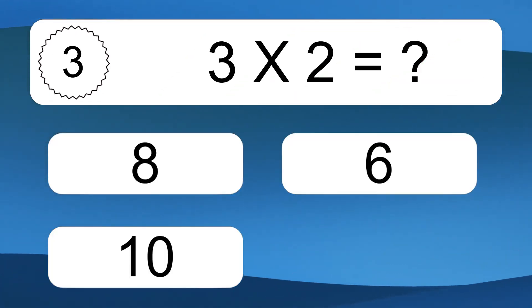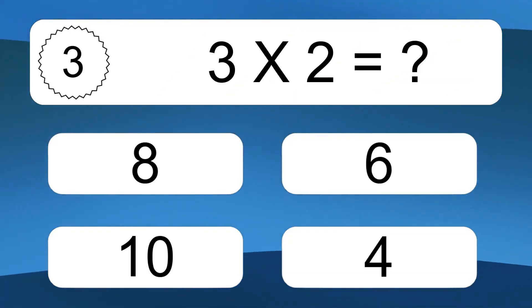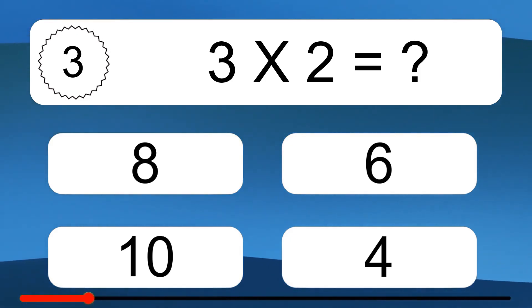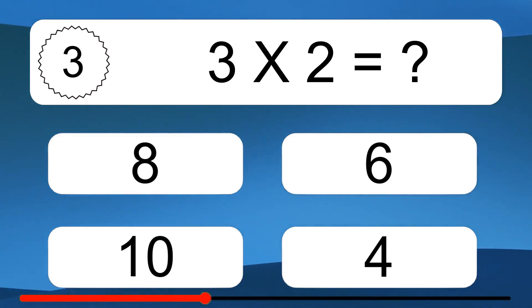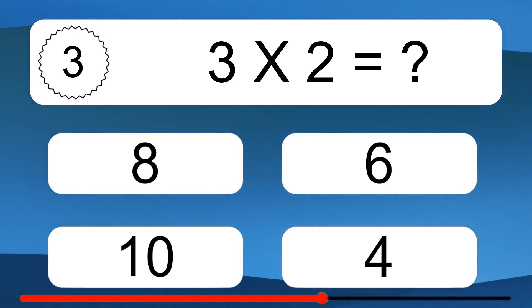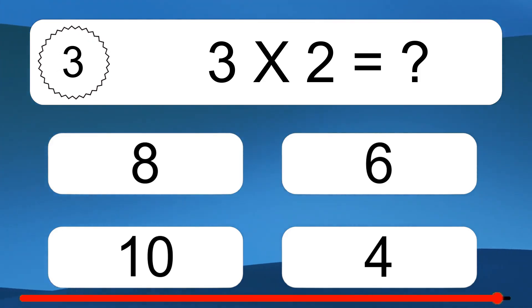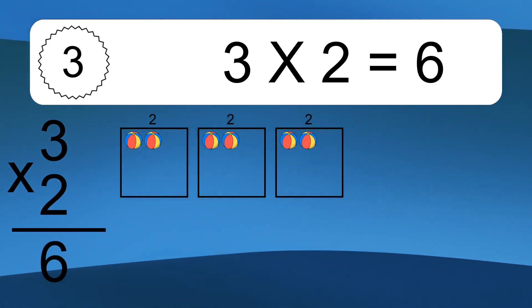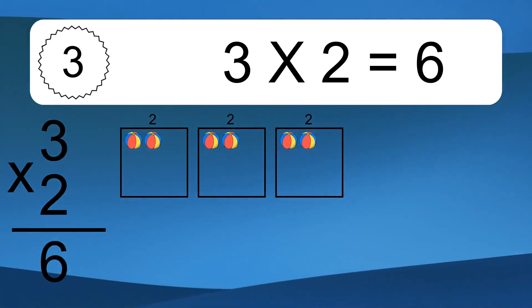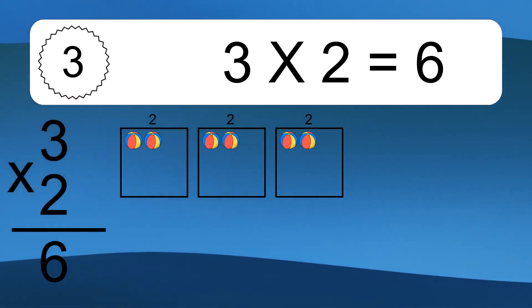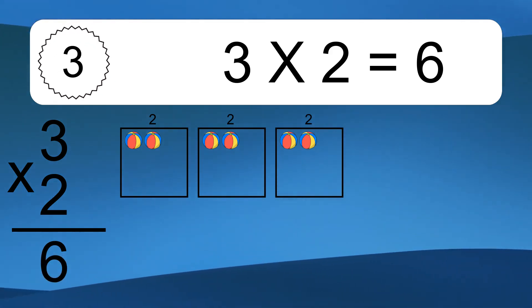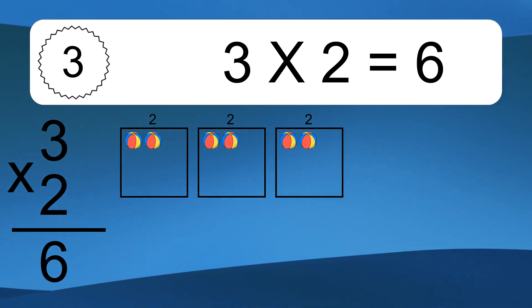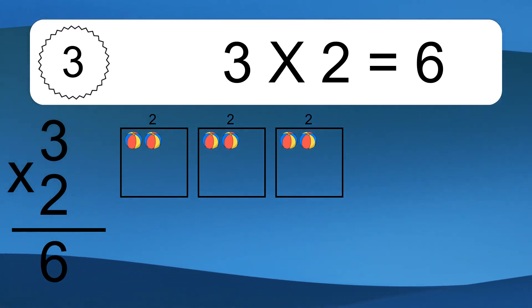3 times 2 equals what? 3 times 2 equals 6. We have 3 boxes, and each box has 2 colorful balls inside. If you count all the balls in all the boxes together, you will have 3 times 2 balls. This equals 6 balls.